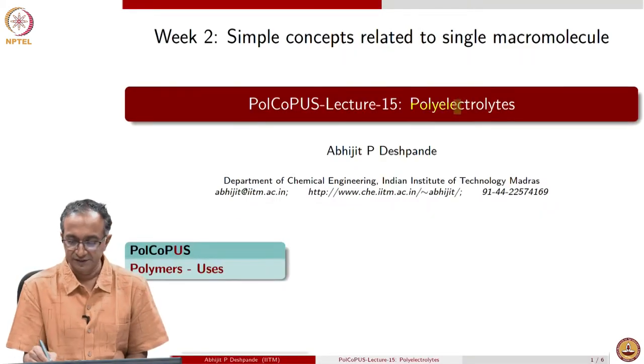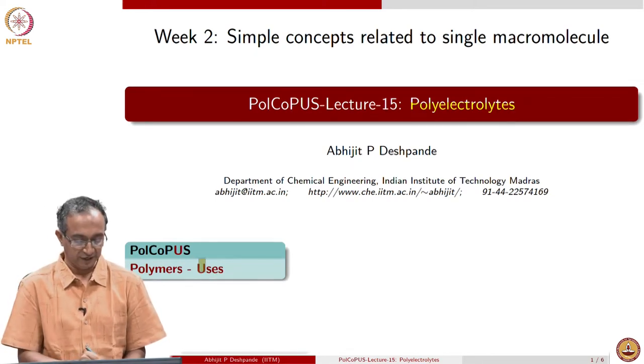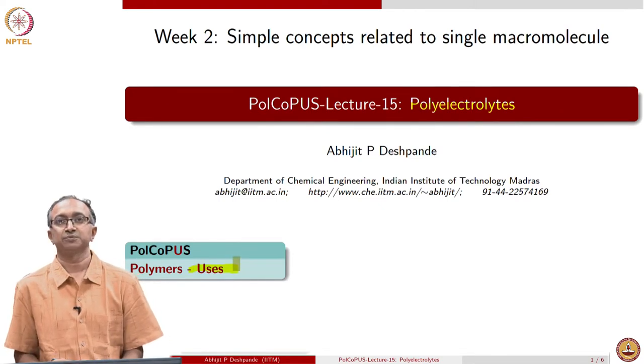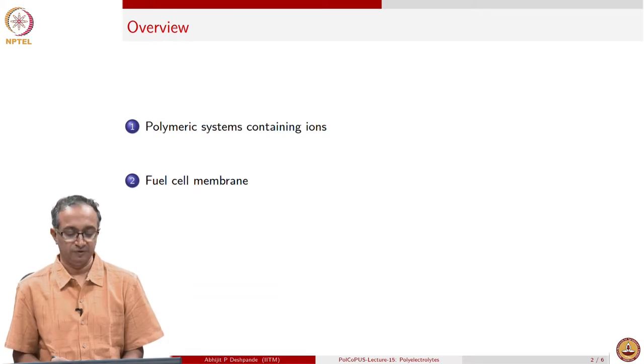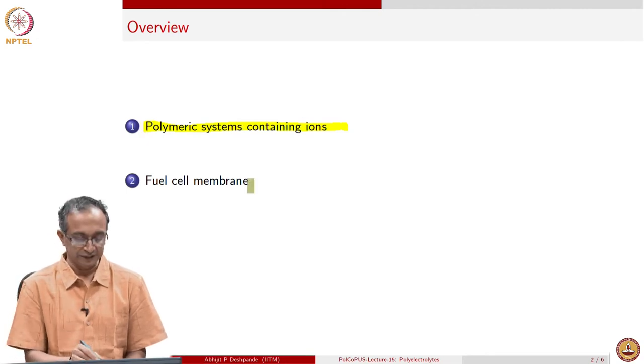Hello, let us continue our discussion of polymeric materials. This week we are looking at properties of a single macromolecule, and we have already seen examples of how single macromolecule size, flexibility, and shape can give us very good insights about bulk behavior. One important aspect of a single macromolecule is the charges on it, and we have already discussed polyelectrolytes. In this lecture we will look at polyelectrolytes from their applications point of view, first by looking at several examples of polymeric systems which contain ions, and then we will pick up one specific example.